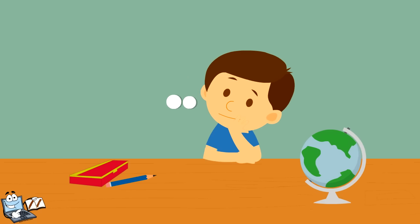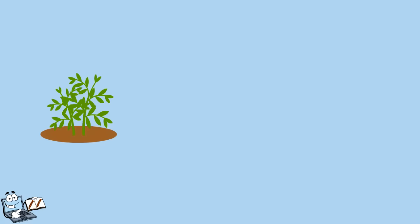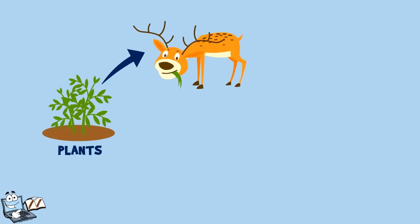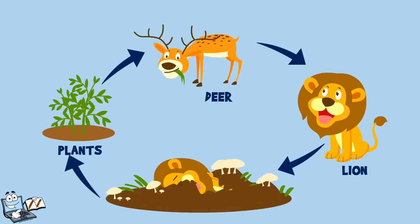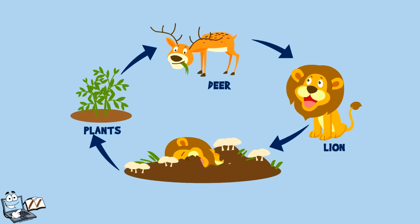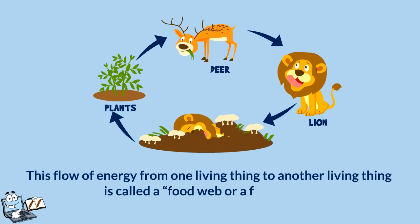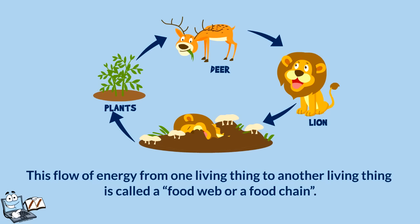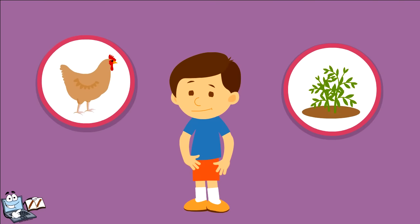Where does this energy come from and how does it get passed around to all living things? Energy passes from one organism to another as they eat plants or any other one. This flow of energy from one living thing to another is called a food web or a food chain. We humans get our food from animals and plants.